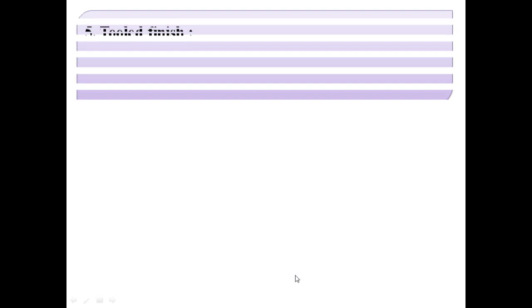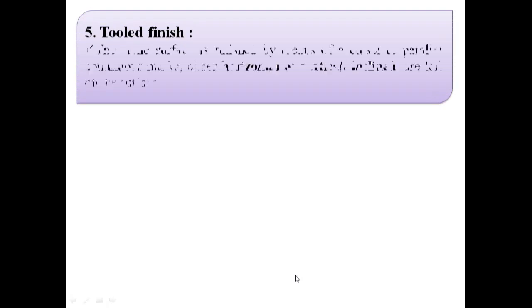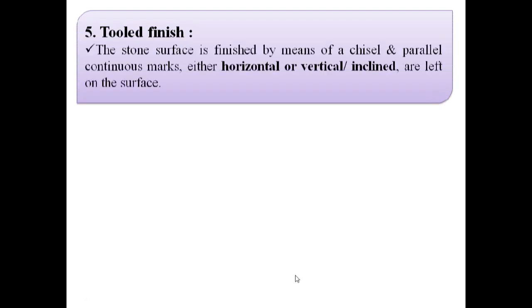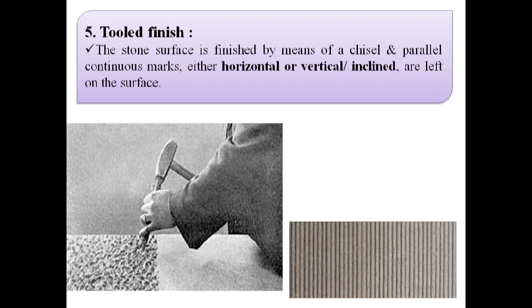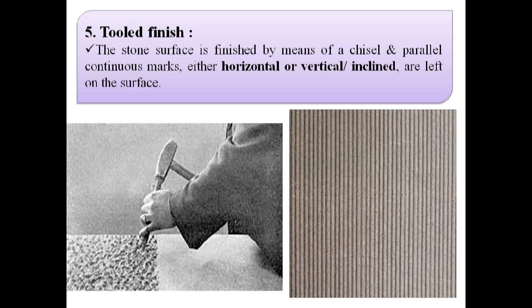The next finish is tooled finish. The stone surface is finished by means of a chisel, and parallel continuous marks — either horizontal, vertical, or inclined — are left on the surface. These two images show the tooled finish.